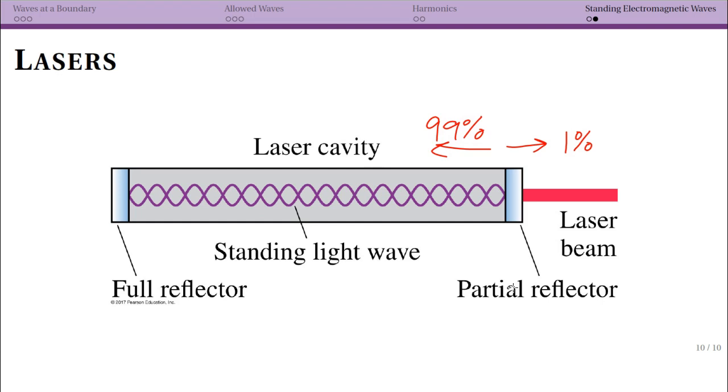And if anything, I think it actually reflects even more than 99%. I think it's less than 1% gets transmitted. But the idea is you're trying to set up a standing light wave inside. And the details of where the light actually comes from and why we want to create a standing wave actually requires some modern physics, thinking about atomic energy levels to really understand why we want this standing wave. But the basic idea is we get a standing wave that's electromagnetic in nature.